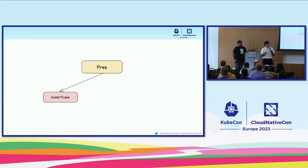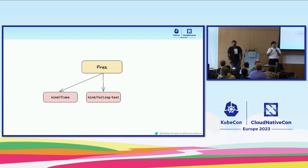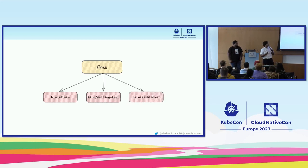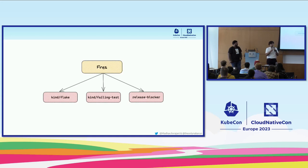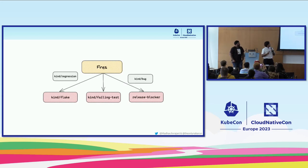Then we have a failing test — not flaking, it's just going to fail throughout the time. And then we have a release blocker: stop everything, it doesn't matter what freeze we are in, we need to fix this so that we can ship Kubernetes on time. There are other types of fires like regressions — something went wrong after it got merged or after we shipped something. There are also just regular bugs where something got merged that shouldn't have.